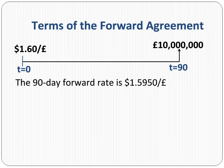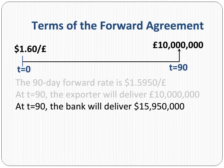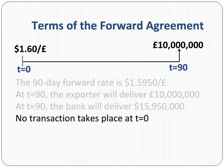Notice the forward rate is different than the current spot rate, and this is very common. At T equals 90, the exporter agrees to deliver 10 million pounds to the bank. Also at T equals 90, the bank agrees to deliver $15,950,000 to the exporter. No transaction takes place at the signing of the contract.